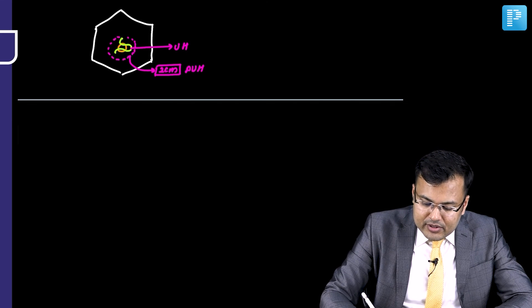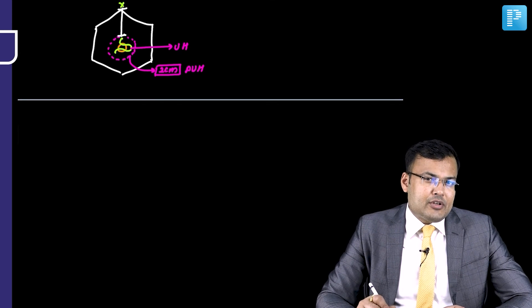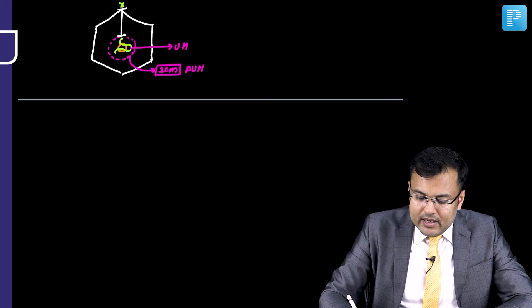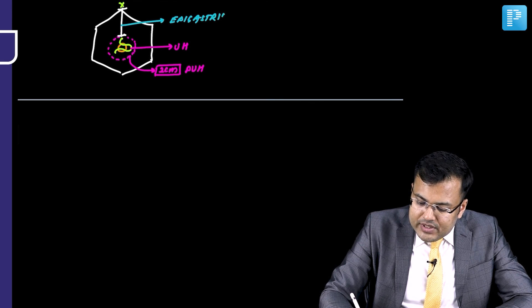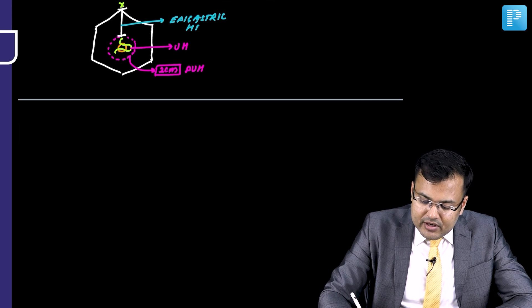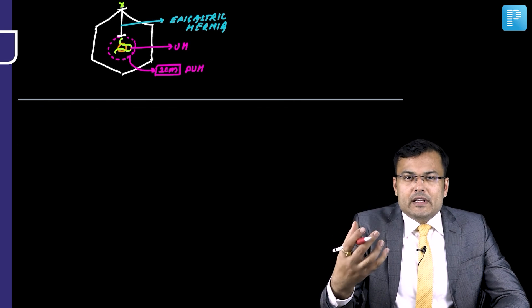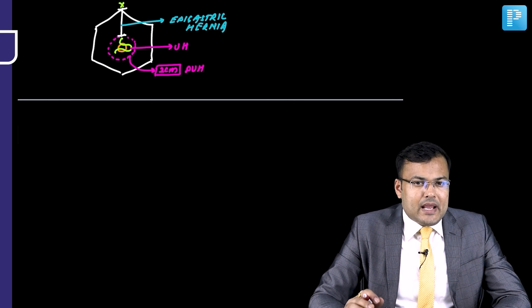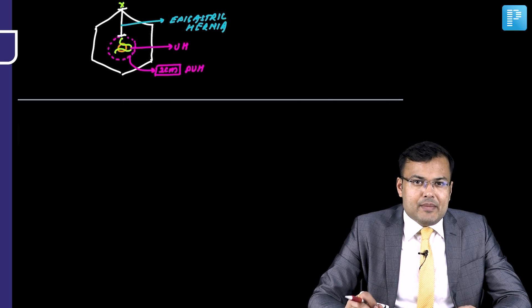This is the xiphoid process. From the xiphoid process till 2 cm of the umbilicus, any hernia occurring in this region is epigastric hernia. To summarize: herniation directly via umbilicus is umbilical hernia; within 2 cm of umbilicus is paraumbilical hernia; from xiphoid process till 2 cm of umbilicus is epigastric hernia.